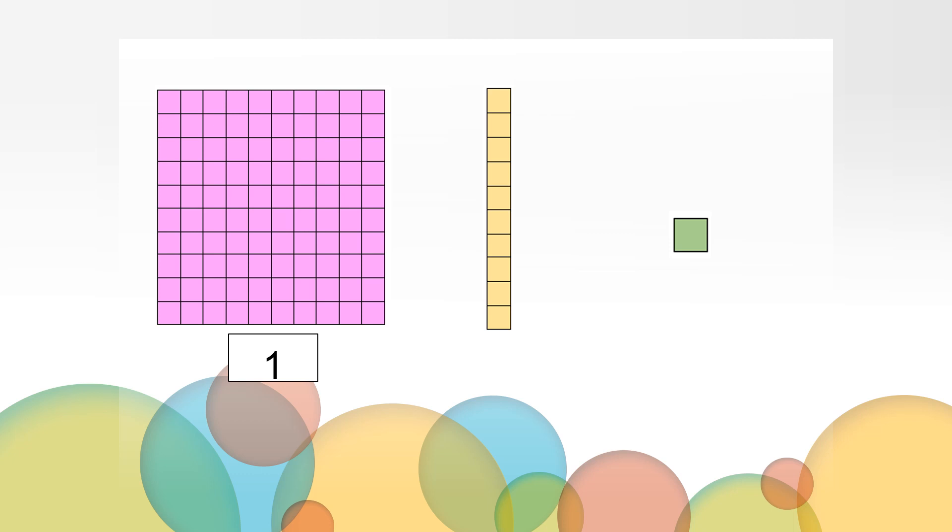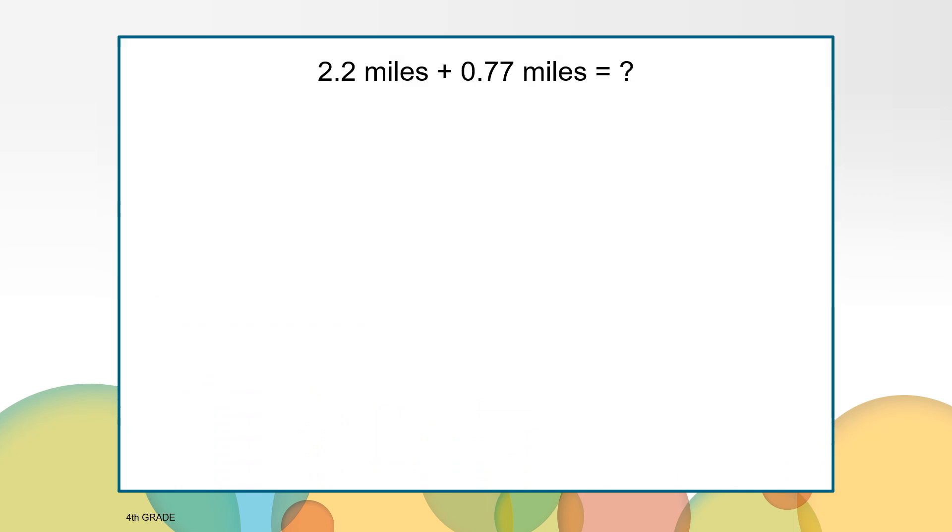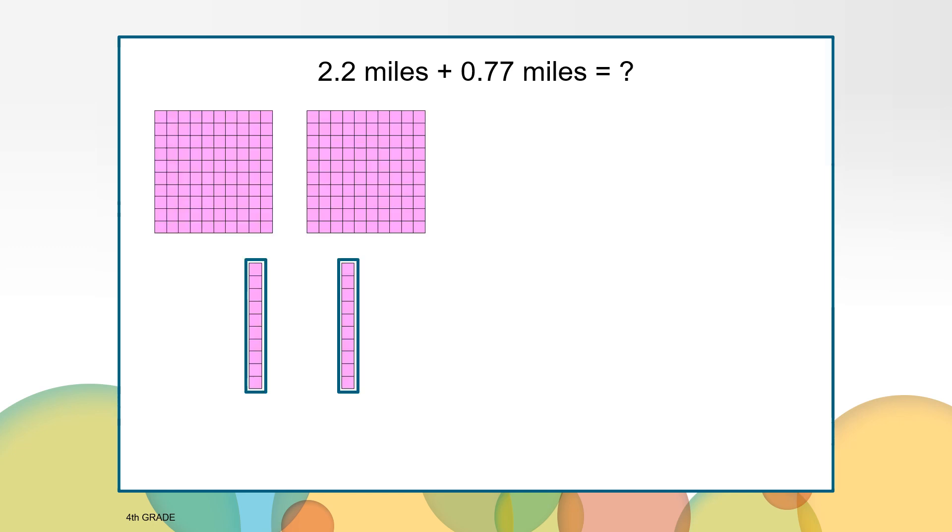We can also represent the decomposing strategy with pictures. In this case, we'll think of a flat as 1, a rod as 1 tenth, and a square as 1 hundredth. So take a minute to create a picture in your mind of what 2 and 2 tenths miles would look like if we represented it with the blocks. We would show it with 2 flats and 2 rods.